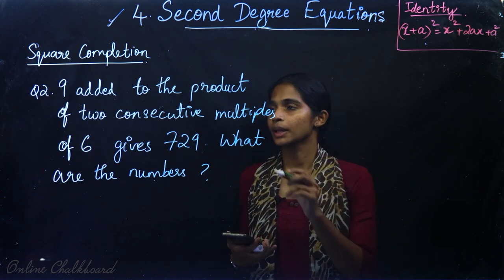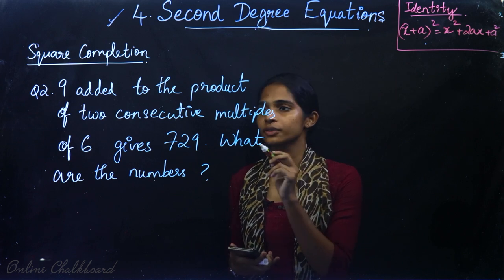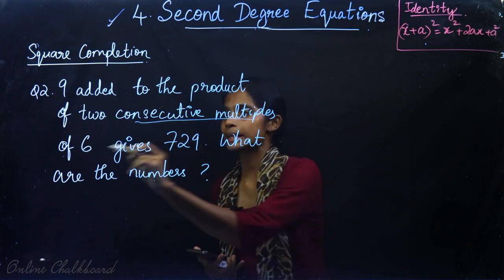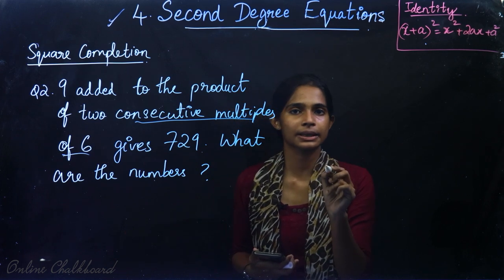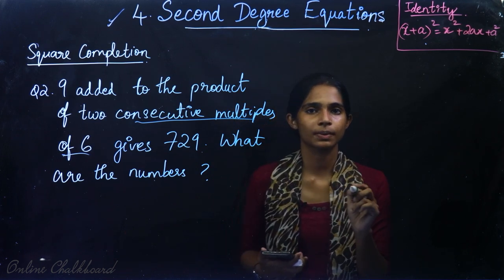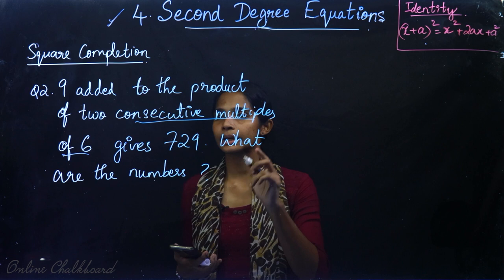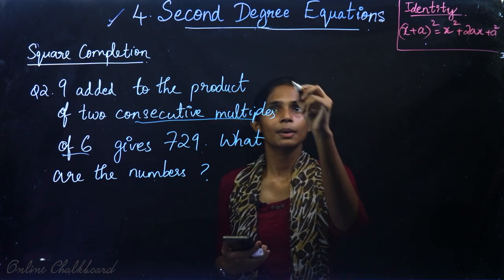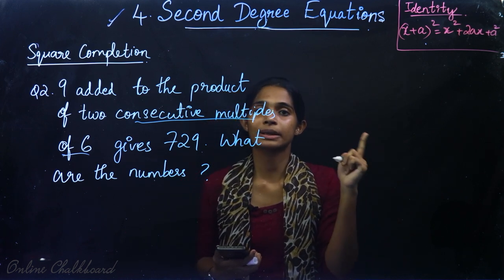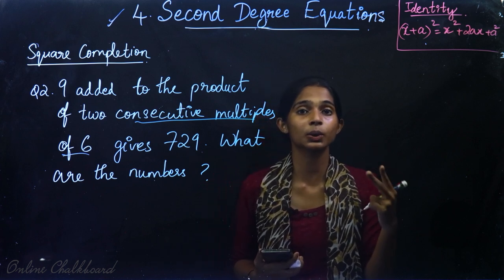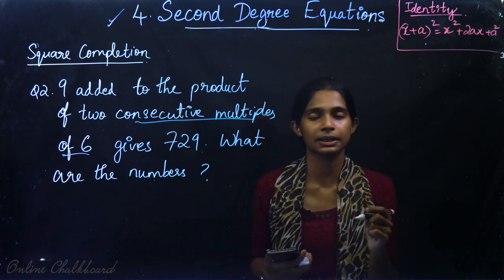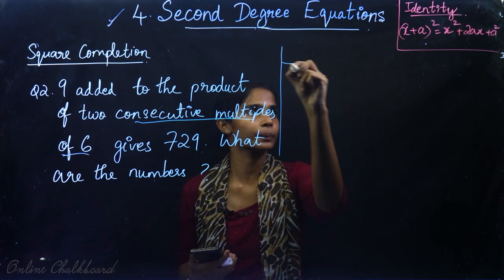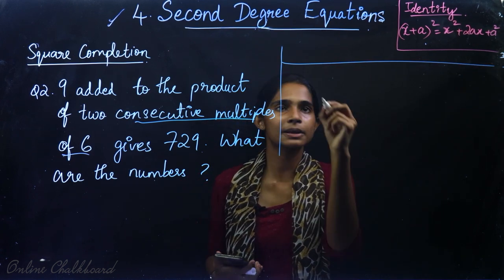Question number 2: 9 added to the product of 2 consecutive multiples of 6 gives 729. What are the numbers? First, let us identify how to express 2 consecutive multiples of 6.